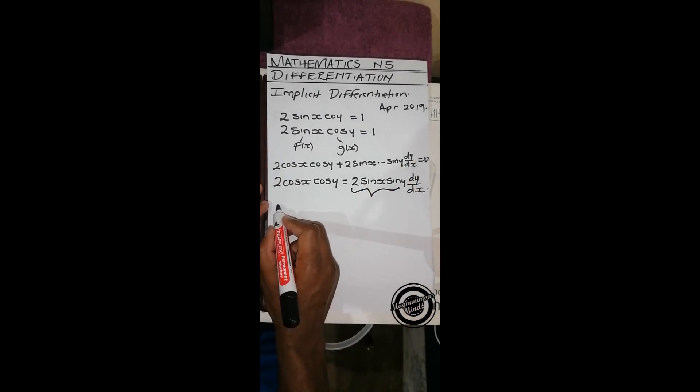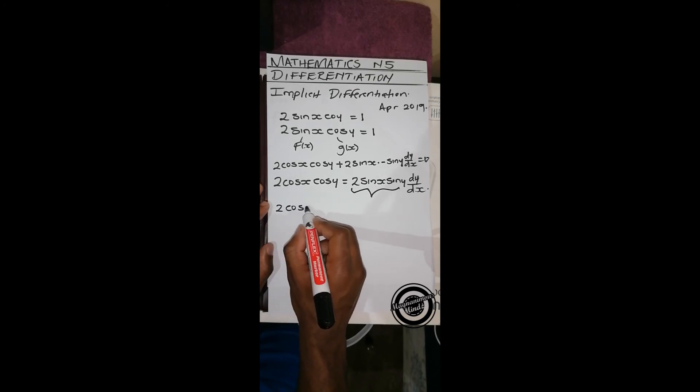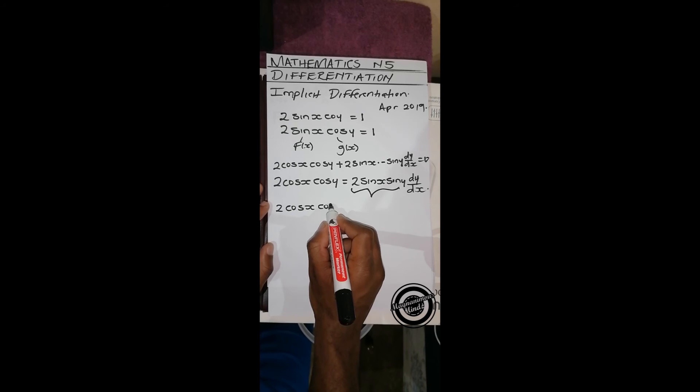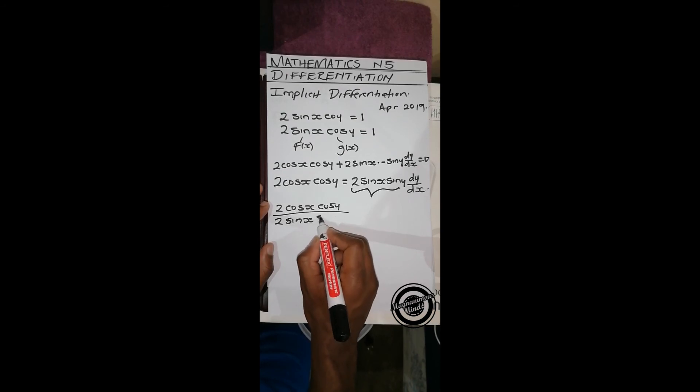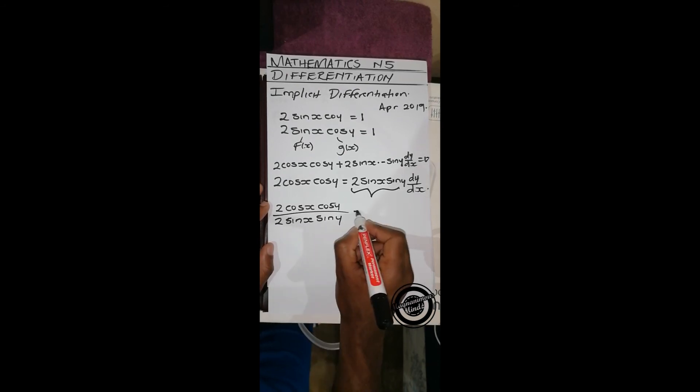We'll be left with 2 cos x cos y over 2 sin x sin y equals dy/dx.